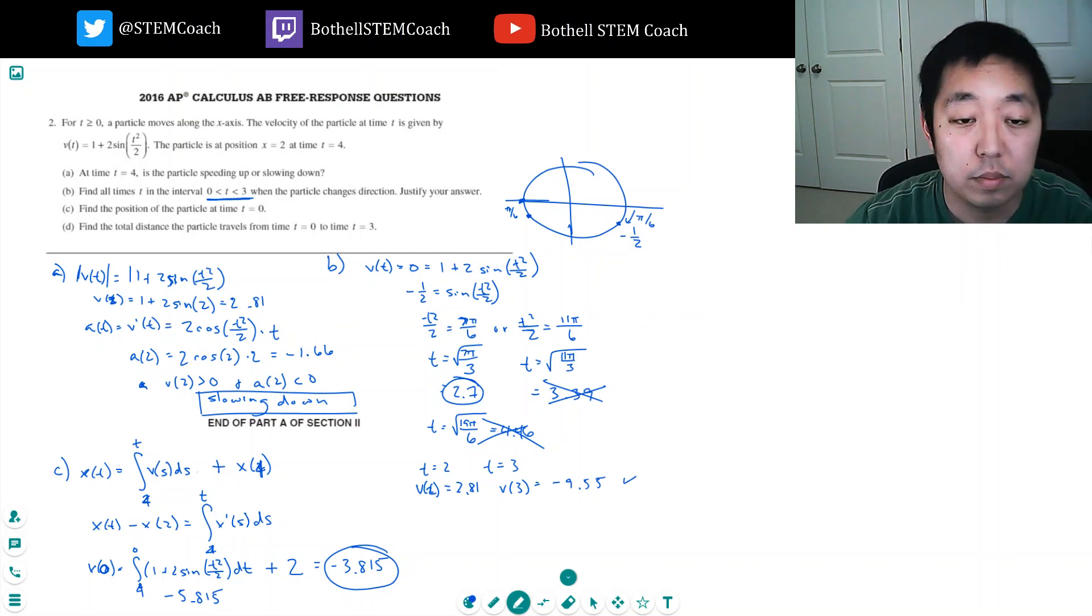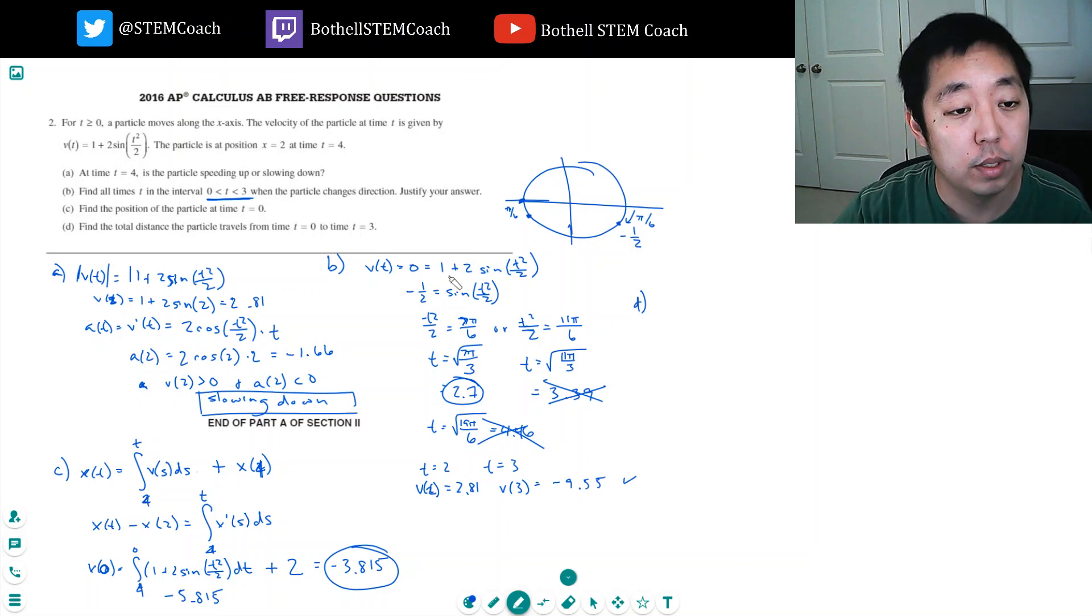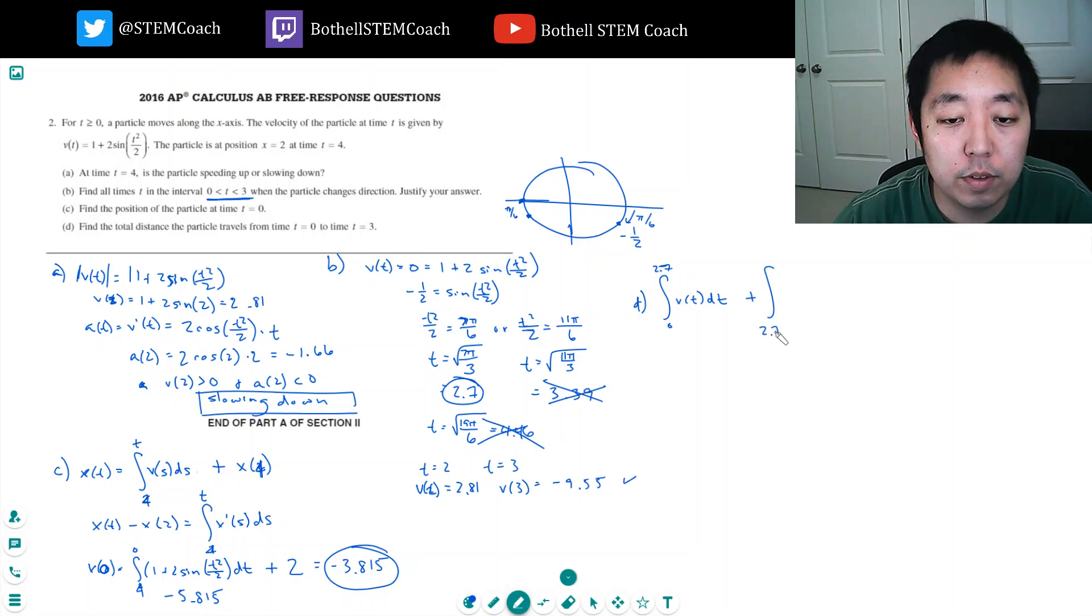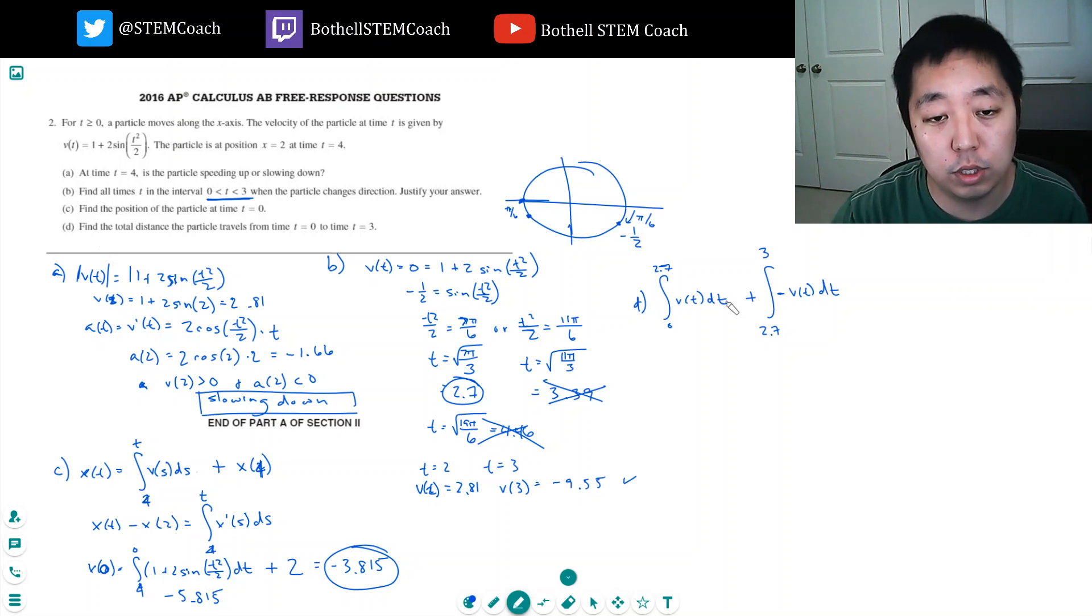Do it over here. Find the total distance. Part D, find the total distance from time 0 to 3. Total distance traveled is I want to look at adding up all of the positions. Now because he's traveling in the positive direction between 0 and 2.7, the distance for between 0 and 2.7, I want to add up v(t) dt. And then from 2.7 to 3 he's traveling in the negative direction, so I want to do negative v(t) dt. And the reason you do this is there's a difference between displacement and total distance traveled.